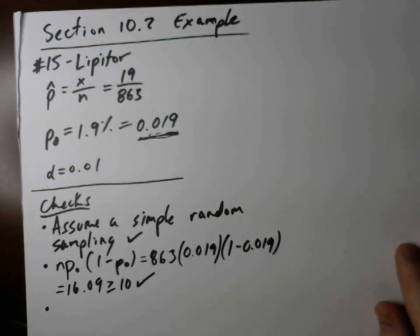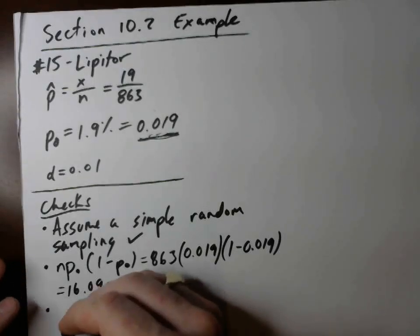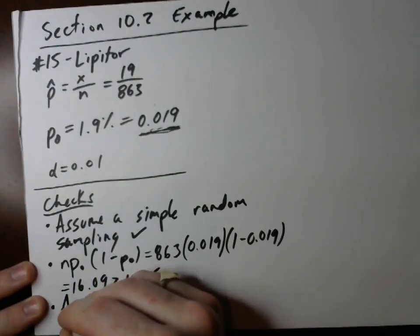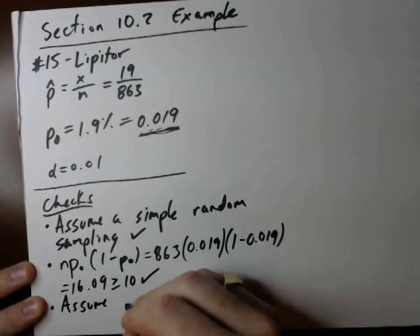There's no reason to assume that for this example about Lipitor, that each of the values in the 863 patients, each of those people, their results for their cholesterol levels, there's no reason to assume that they are dependent of each other. So we can assume independence.